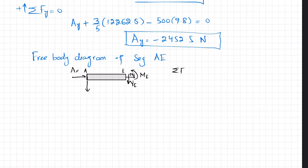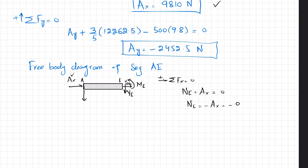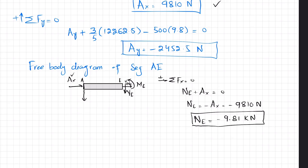Applying ΣF_x = 0 with rightward positive: N_E + A_x = 0, so N_E = −A_x = −9,810 N = −9.81 kN. The negative sign means our assumed direction for N_E was wrong; N_E actually acts opposite to the assumed direction.